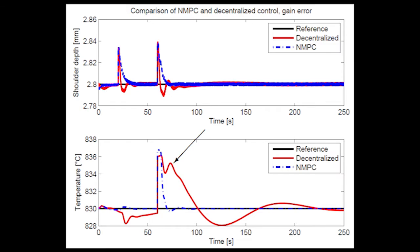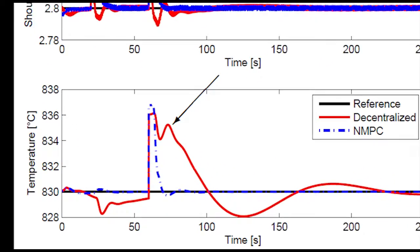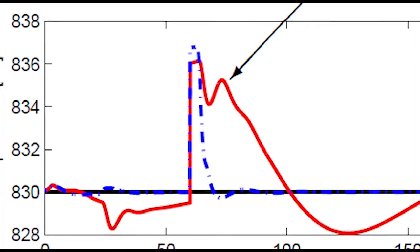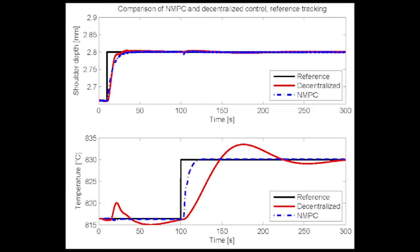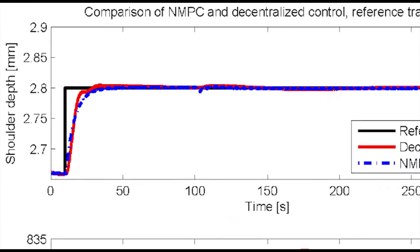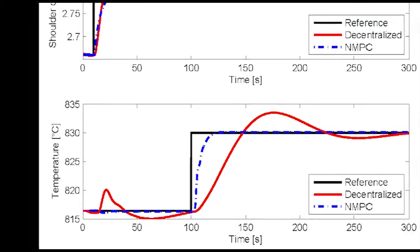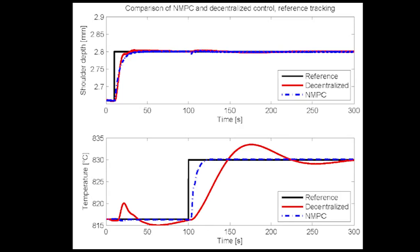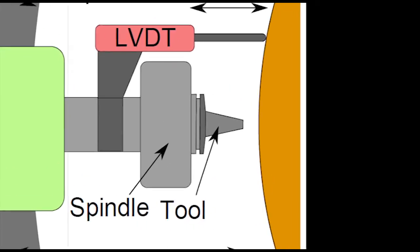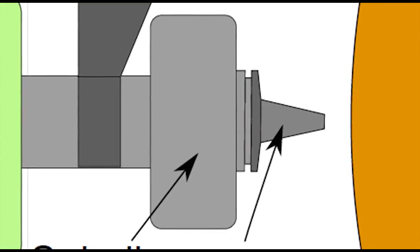Even though the controller satisfies performance requirements, simulations indicate that the non-linear model predictive controller achieves even better control performance. This model predictive controller compensates for the cross-connections between the process variables and the resulting closed-loop system is almost completely decoupled. This decoupling is important during the initial traverse of the weld.